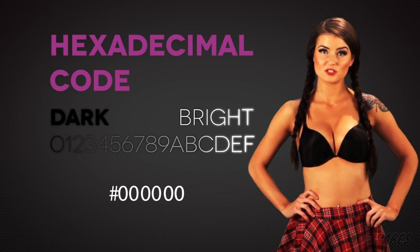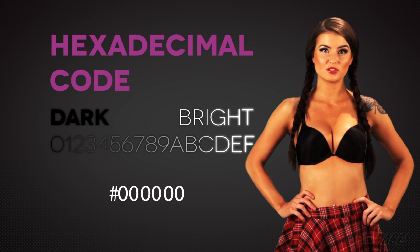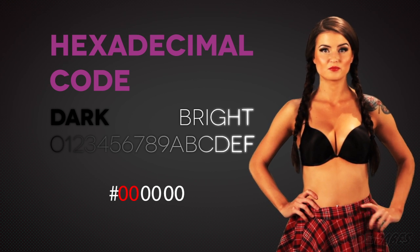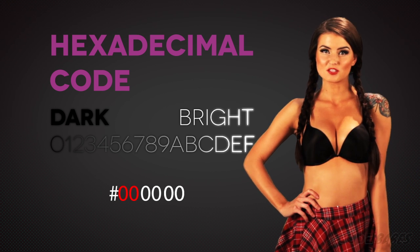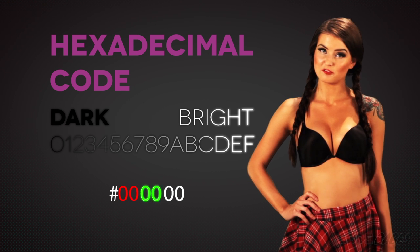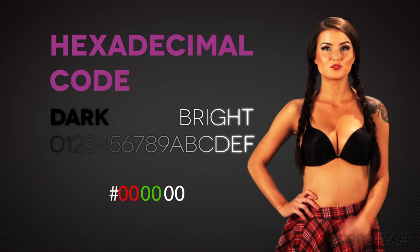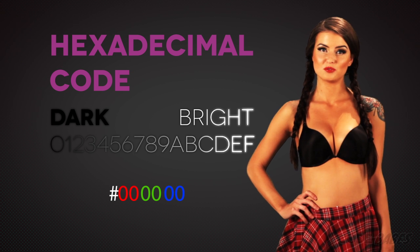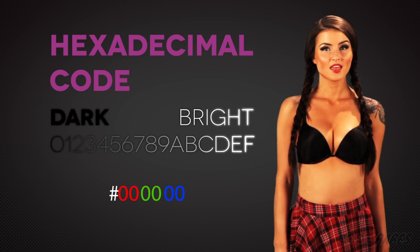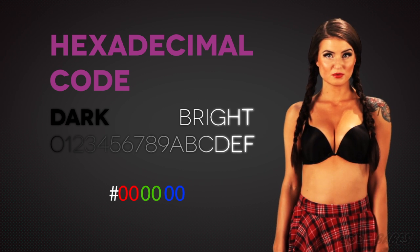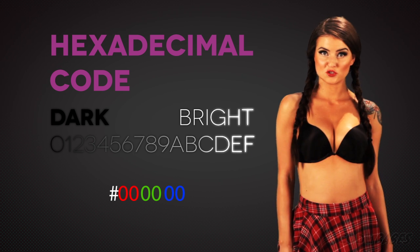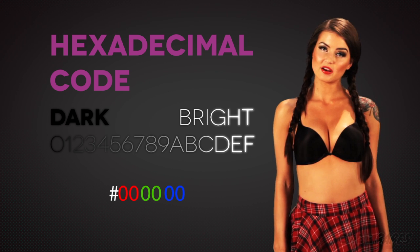The first two digits correspond to the level of red, the second two to the level of green, and the last two to the level of blue. If values repeat, it can be shortened to three characters like this.